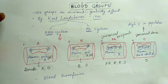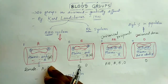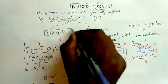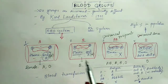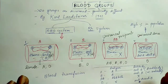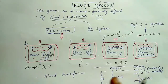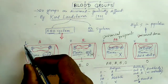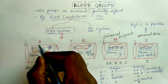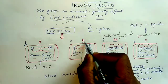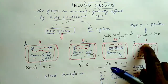Now we will see about the ABO system. Suppose there are four persons, and all four have different blood groups: one has blood group A, one has blood group B, one has AB, and one has O.